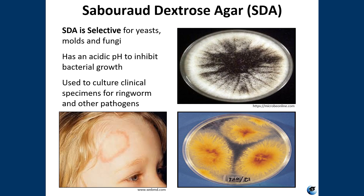SDA, Sabouraud dextrose agar, is similar to PDA. SDA has an acidic pH to inhibit bacterial growth. SDA is primarily used for the selective cultivation of yeast, mold, and certain pathogenic fungi. It's often used to identify microbial contamination in food and cosmetics, and again for looking at clinical specimens.